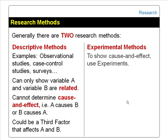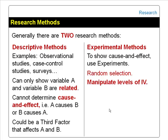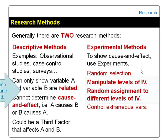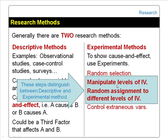In order to show cause and effect, we have to use experimental research methods. We carry out four steps. Step 1: randomly select subjects for the experiment, to address external validity — the ability to generalize your study to other subjects in other situations. Step 2: manipulate the levels of the independent variables. Step 3, and the most important: randomly assign the randomly selected subjects to the different levels of the manipulated independent variables. Step 4: control the extraneous variables. Steps 2 and 3 distinguish between descriptive and experimental research methods.